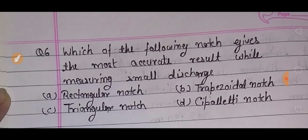अपना next question: which of the following notch gives the most accurate result while measuring small discharge? दोस्तों, notch वो device होती है जो पानी का discharge measurement करने के लिए use की जाती है. Options में rectangular notch भी है, trapezoidal notch भी है, triangular notch भी है और cipolletti notch भी है, सभी discharge measure करने के काम आते हैं.